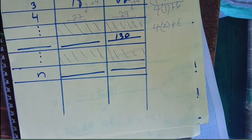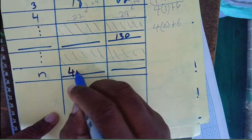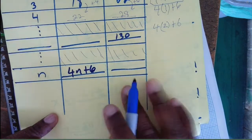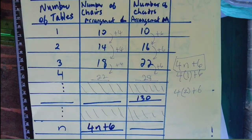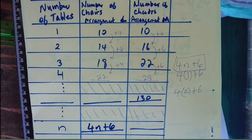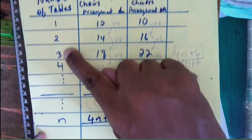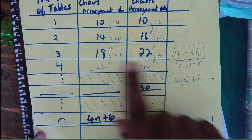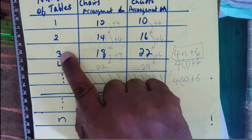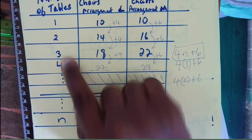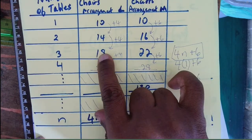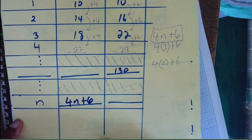So the formula is 4n + 6. Let's test it: 4 times 3 is 12, plus 6 is 18. It works.